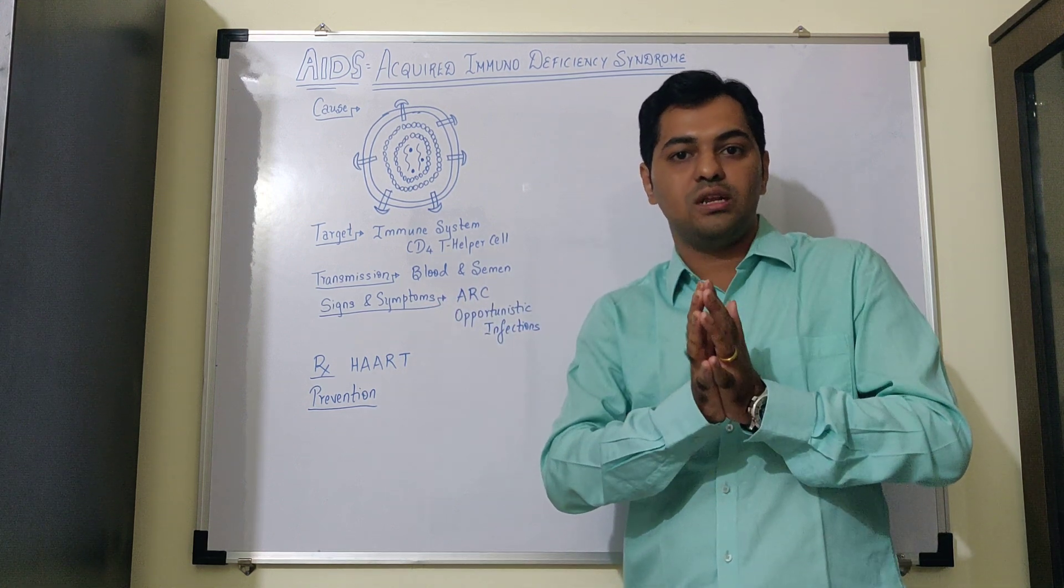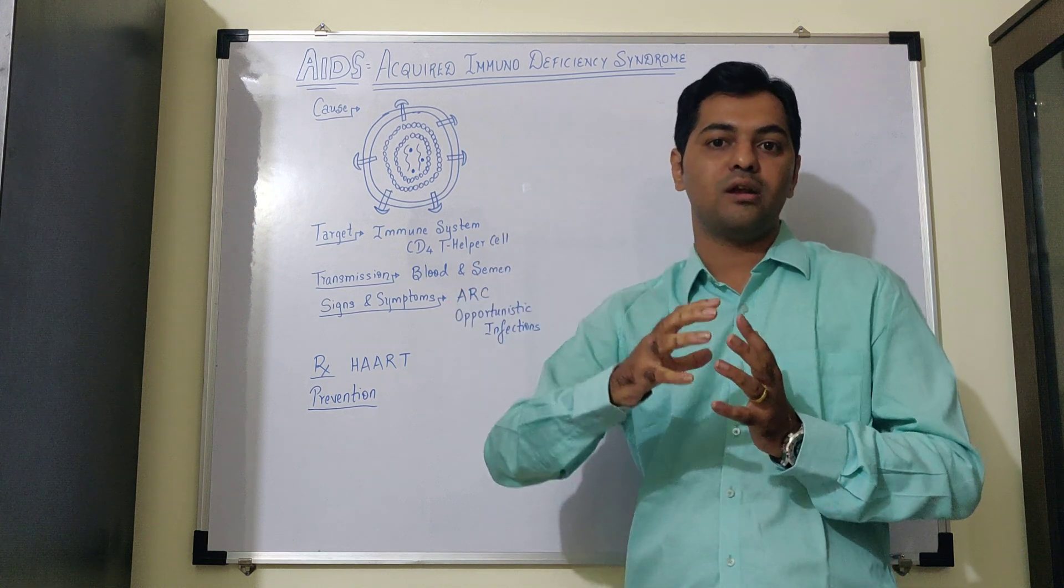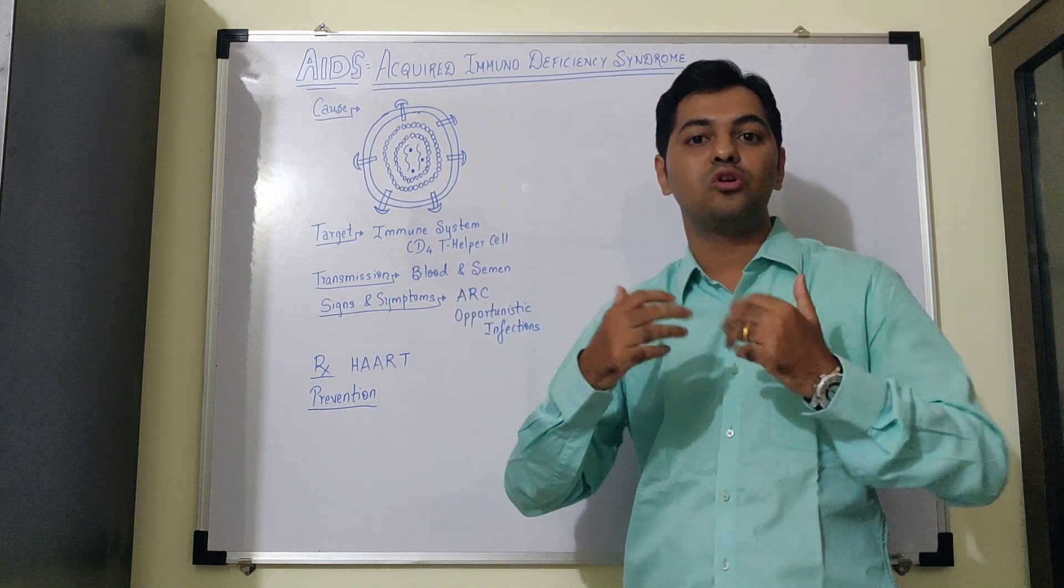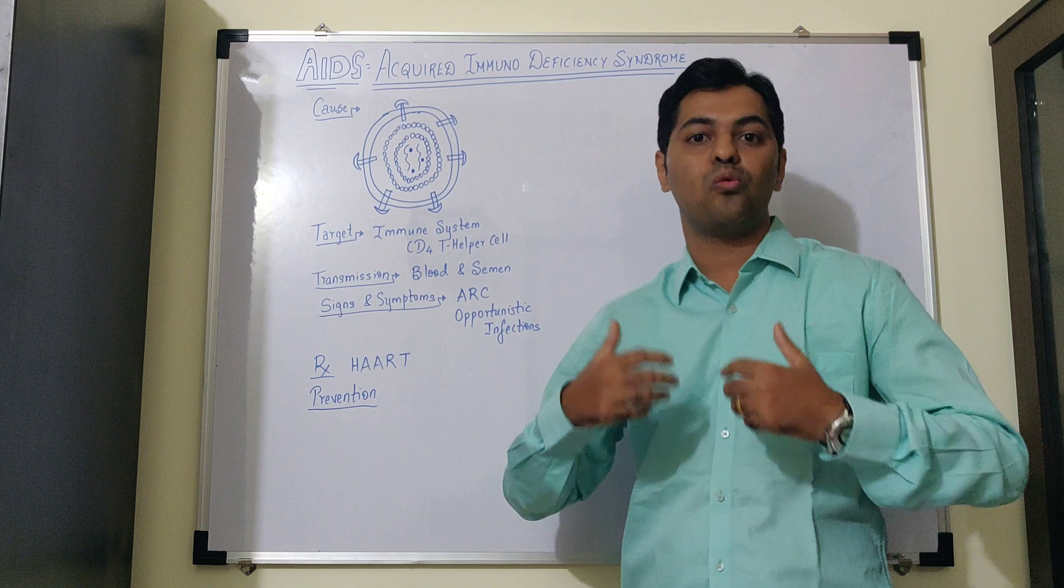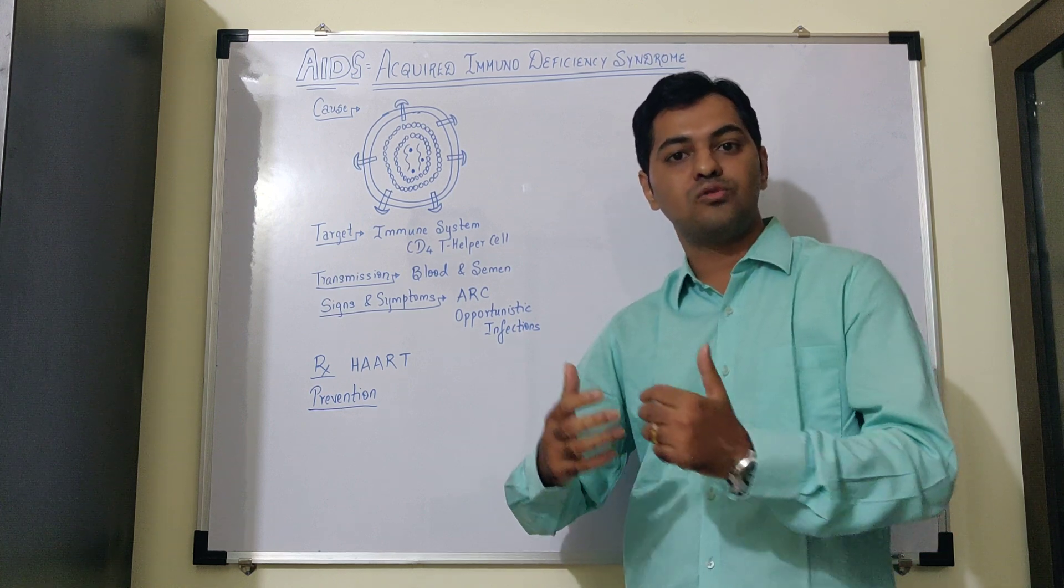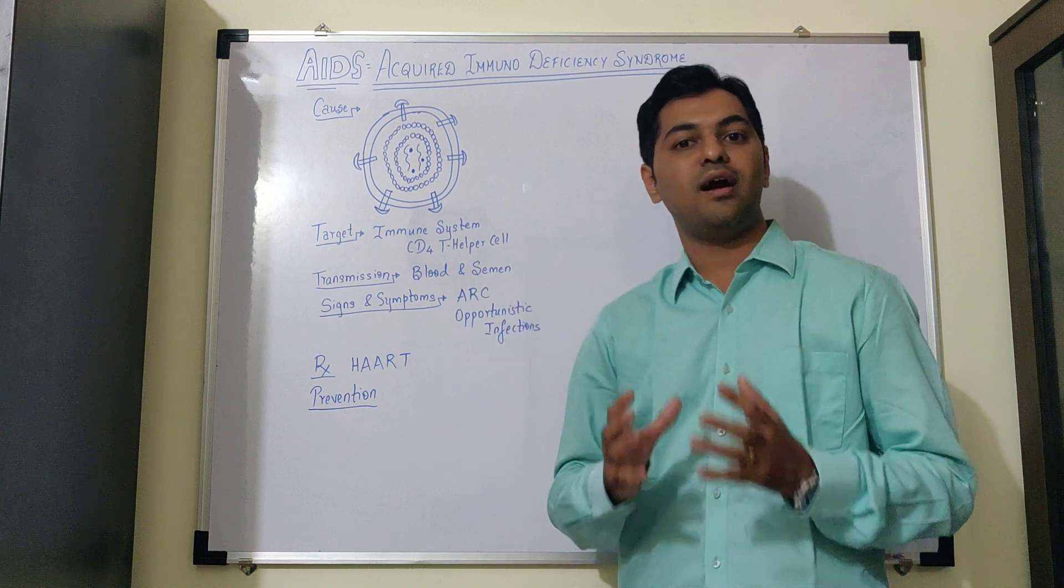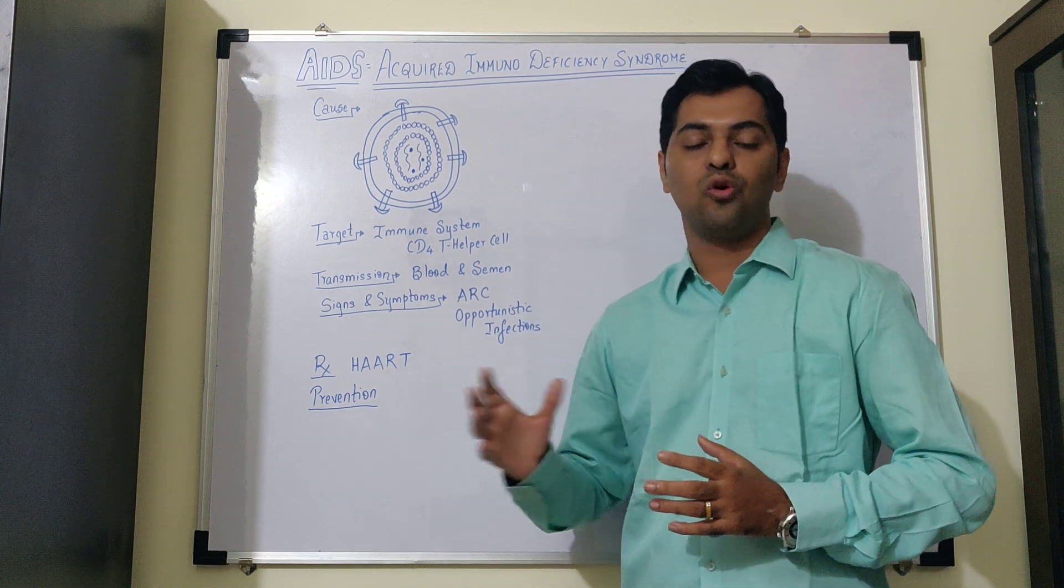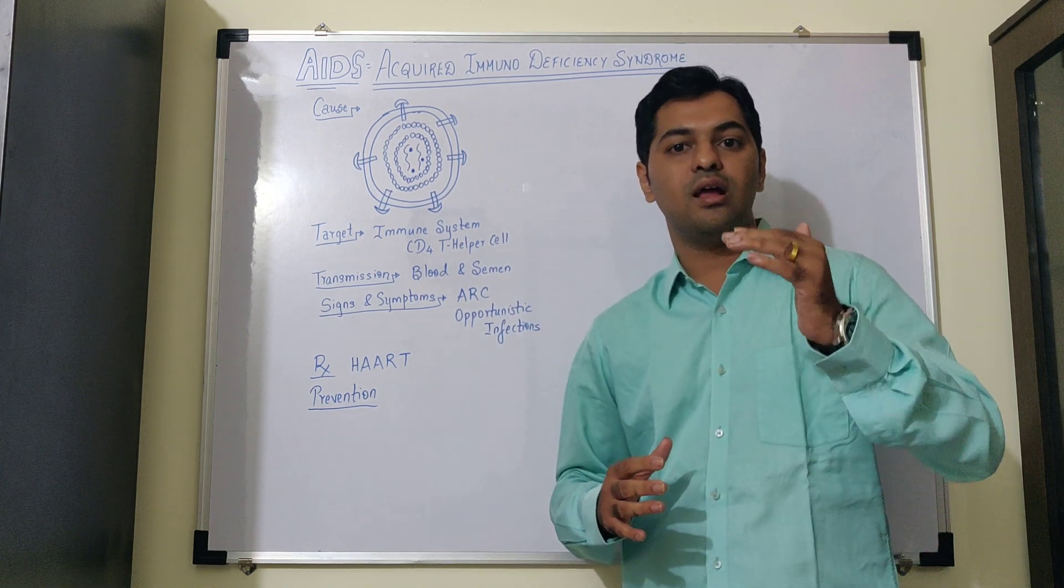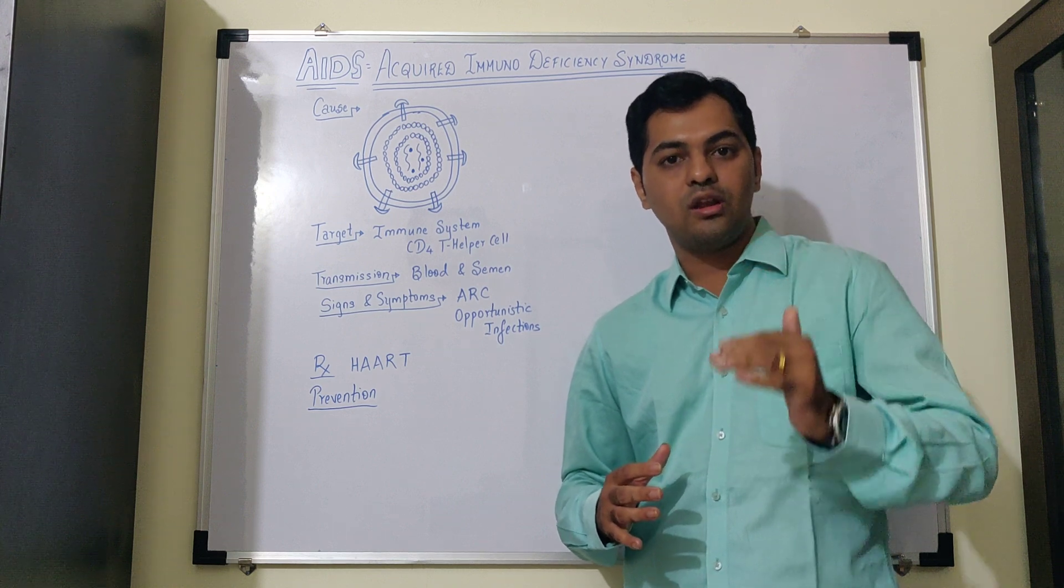And now, the host DNA, since it is getting dominated by the viral DNA, it is made to synthesize further more viruses by transcription and translation. So, basically, the virus controls the entire metabolic machinery of the host cell. And thus, the T helper cell in the patient drastically goes down.